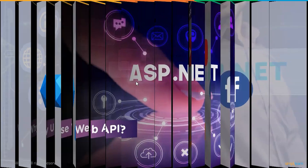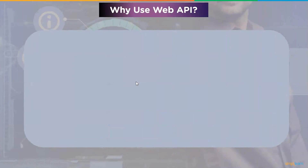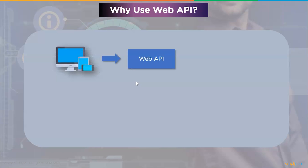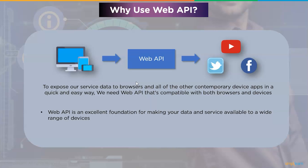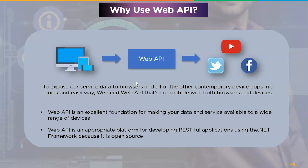Why use a Web API? A web-based application alone is insufficient. People use iPhones, mobile phones, tablets, and other devices regularly, and these smartphones come with a plethora of apps. We are migrating away from the web towards the realm of apps. If you want to expose your service data to browsers and all contemporary devices in a quick and easy way, you need an API compatible with both browsers and devices. Web API is an excellent foundation for making your data and services available to a wide range of devices, using all HTTP features without additional configuration.